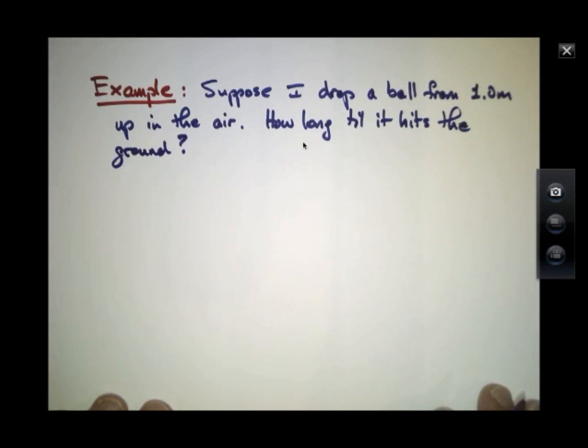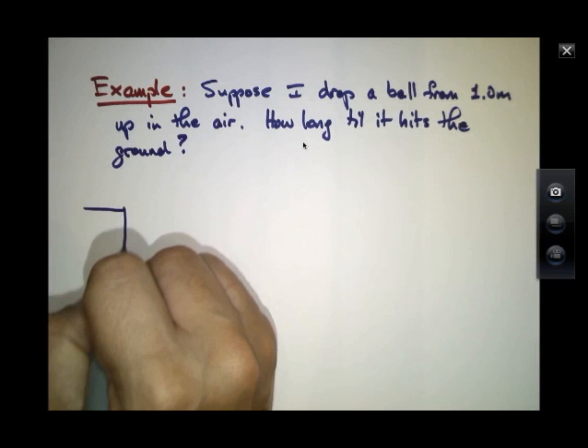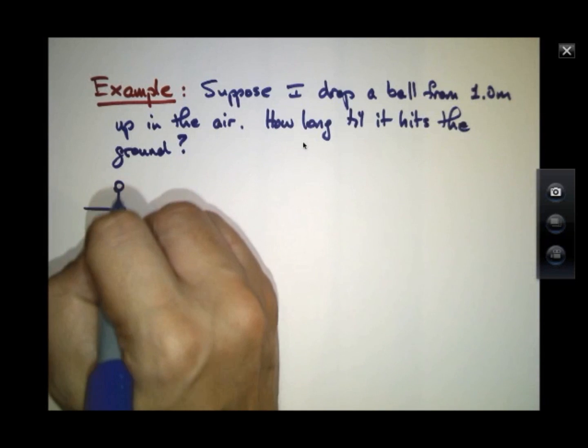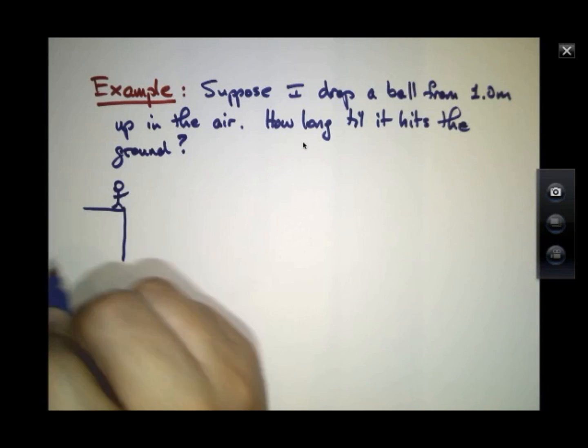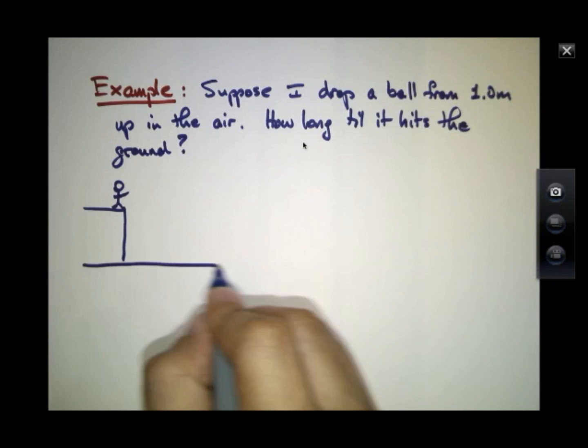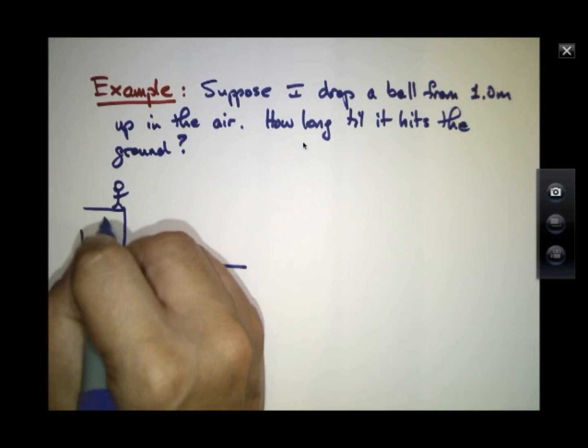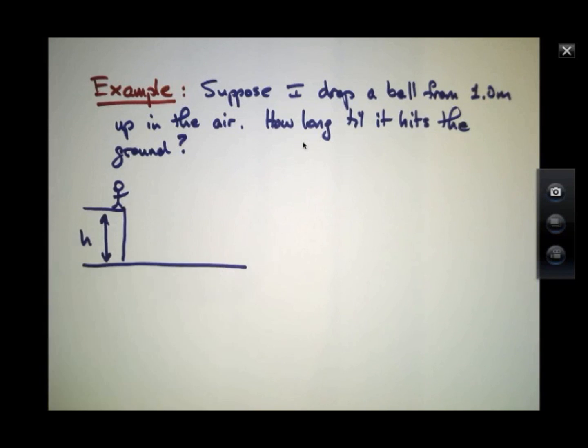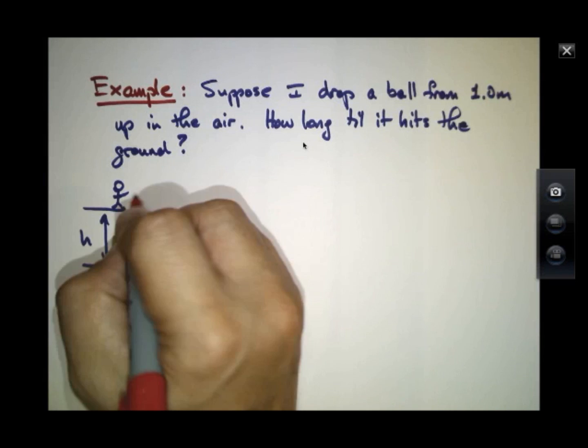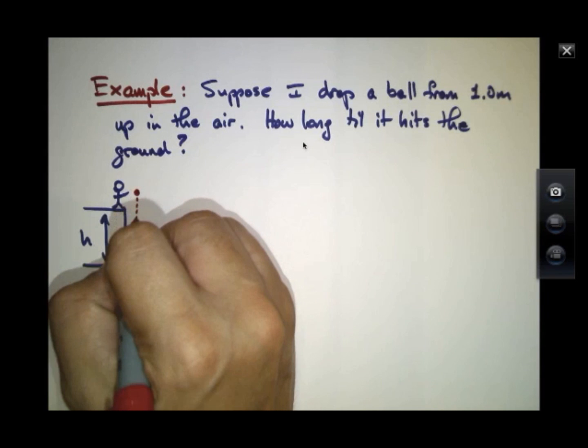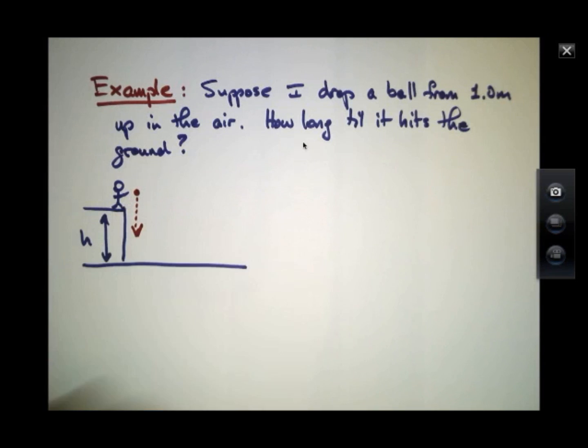So let's try an example problem just using these two equations. Suppose I'm standing up here on a ledge and the ground is down below. This height would be 1 meter. And if I just let the ball go, it's going to fall, of course.